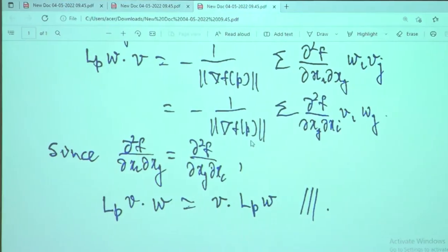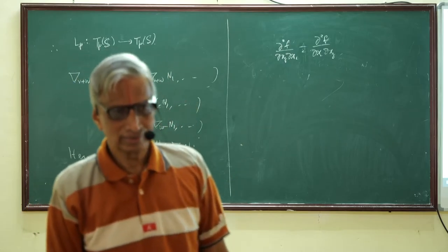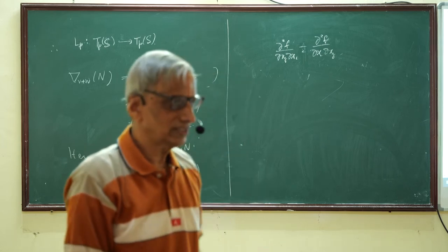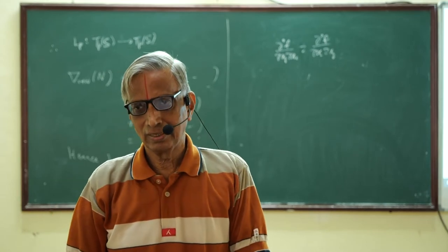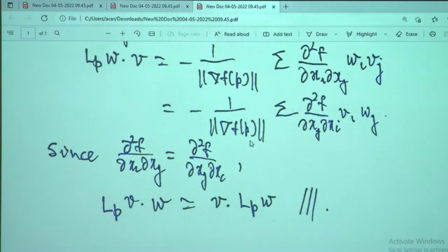Once you have the fact that the operator Lp is self-adjoint, you can invoke linear algebra. Any self-adjoint or symmetric operator is diagonalizable — there is an orthonormal basis for the space consisting of eigenvectors of the operator Lp. This is what is called the spectral theorem, the finite dimensional spectral theorem.